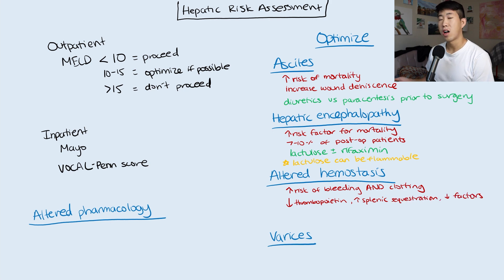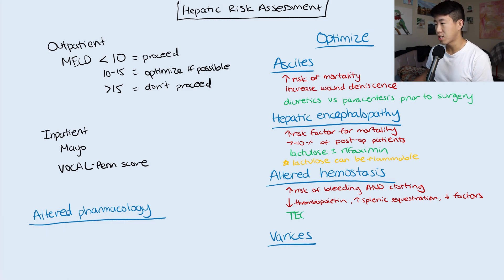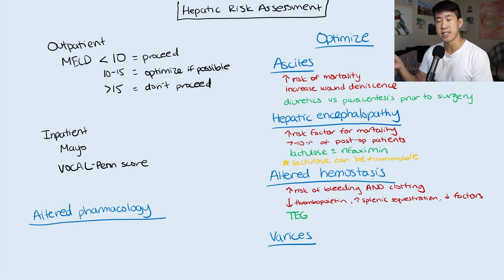The reduced clotting factors include C, S, 2, 7, 9, and 10. These all contribute to both a hypercoagulable state and an increased bleeding hypocoagulable state. One recommendation prior to surgery is a TEG scan — a thromboelastogram — which measures specifically which parts of the clotting cascade are not working and guides which products to replace in patients with cirrhosis.